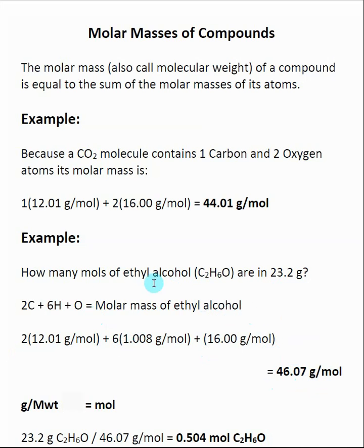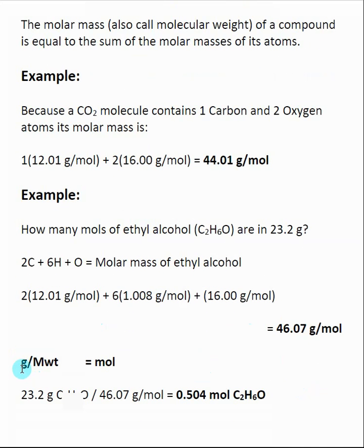We were given a certain number of grams. We want to find the number of moles, and the calculation is analogous to what we were doing with individual elements. If I take grams of a species and divide by its molecular weight, which is in grams per mole, I get mole. So I take the 23.2 grams of ethyl alcohol, divide by its molar mass, 46.07 grams per mole, and get the final answer of 0.504 moles.